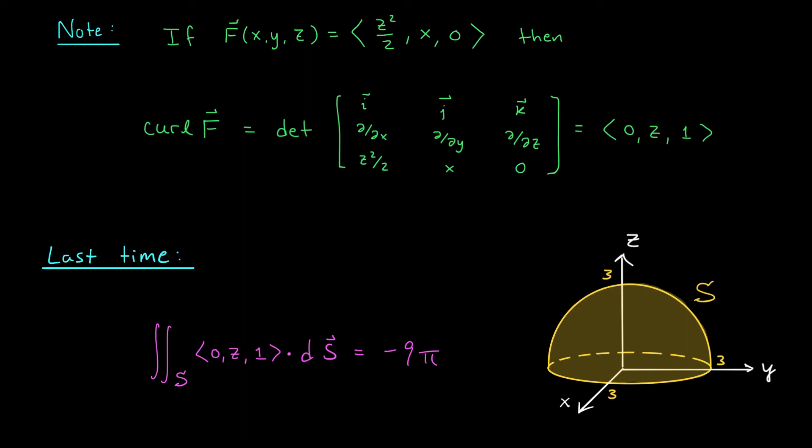Now, if you don't believe me when I say that Stokes' theorem was a huge time saver in the last example, think again. If we actually compute the curl of our vector field, I'll let you work through the computations, you should get the vector ⟨0, z, 1⟩. Now, does this vector field look familiar? It should,